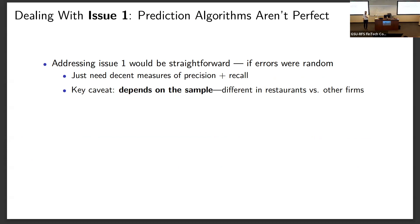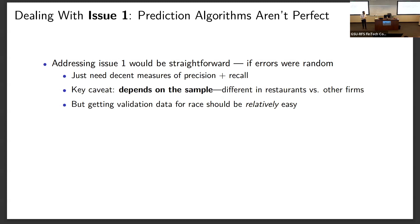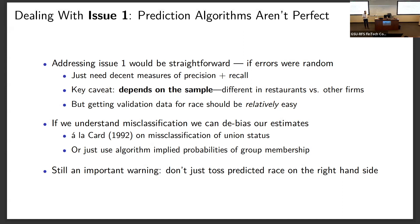An important caution the authors raise is that this really depends on your sample. You can't take the quality of your algorithm in mortgage data and apply it to Florida restaurants, or take Florida restaurants and apply it to manufacturing or another industry. You really need to understand what's going on in your sample. Relative to a lot of measurement error issues, getting decent validation data for race is relatively easy — we do have a lot of data with observed race. Once we understand the misclassification, we can back out the biases fairly easily, either à la David Card's paper on the misclassification of union status, or by using the algorithm's raw probabilities rather than discrete classification on the right-hand side. Nobody is allowed to just throw race on the right-hand side without thinking about this.